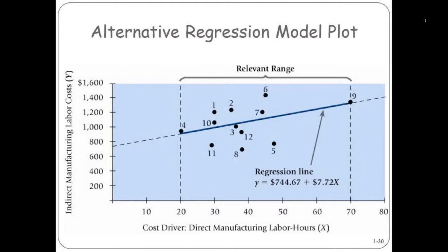Depending on how close you get to 1, the better the predictive ability of your regression line. For costs, I'm not sure how your costs would go down as some kind of a driver goes down — maybe you can think of a driver like that, but it's hard to think of one off the top of my head. Generally speaking, they're going to go up together in some relationship.